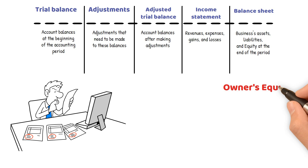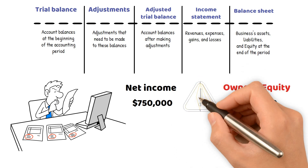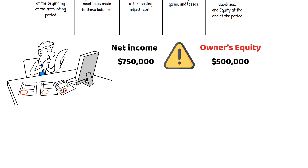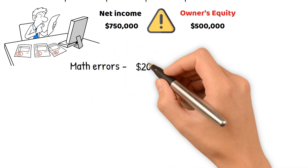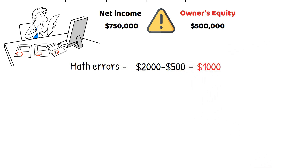If the Balance Sheet and Statement of Owners' Equity columns of a worksheet fail to balance when net income is added to the credit column, the cause could be an error in the worksheet. Common errors include Math Errors, which occur from simple addition or subtraction mistakes when calculating balances.